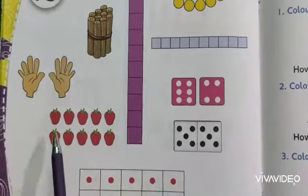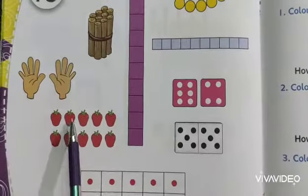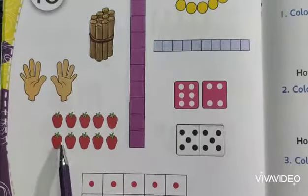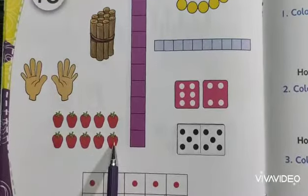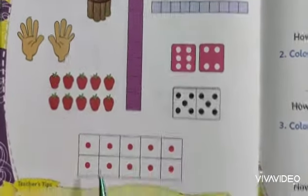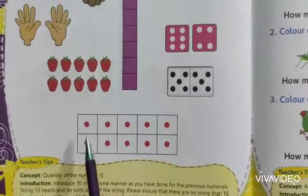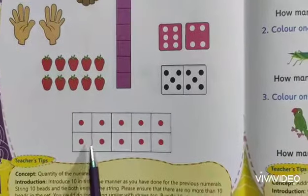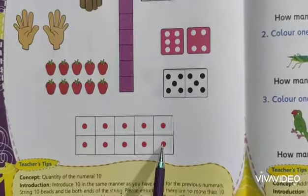Then some strawberries. Let's count 1, 2, 3, 4, 5, 6, 7, 8, 9, 10. Then red dots are there. 1, 2, 3, 4, 5, 6, 7, 8, 9, 10.